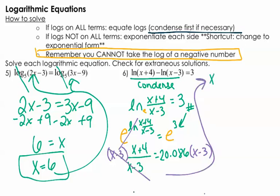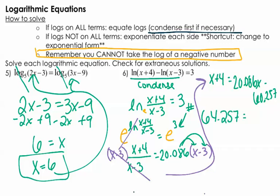So I'm going to have x plus 4 equals, we're going to distribute that. So I'm going to have 20.086x minus 60.257. So now I'll go ahead and solve this. Add the 60.257 to each side. So now on the left side, we're going to have 64.257. And then we're going to subtract our 1x. So 20.086 minus 1 is going to be 19.086.